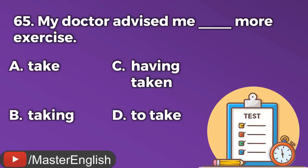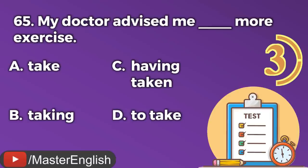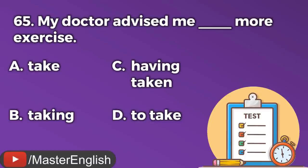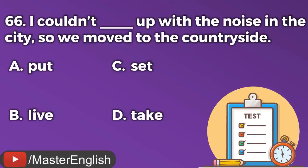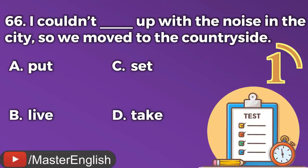Question number sixty-five. My doctor advised me ___ more exercise. A: Take. B: Taking. C: Having taken. D: To take. The correct answer is D: To take. My doctor advised me to take more exercise. Question number sixty-six. I couldn't put ___ with the noise in the city, so we moved to the countryside. A: Put. B: Live. C: Set. D: Take. The correct answer is A: Put. I couldn't put up with the noise in the city.